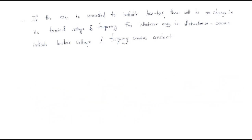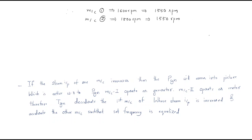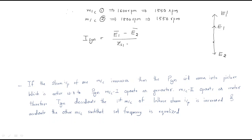Initially the EMFs are E1 and E2. The steam input increase causes E1 to rise to E1-dash. The synchronizing current is then given by: I_sync = (E1 − E2) / (Zs1 + Zs2). This synchronizing current is generated by the interaction of the two machines.